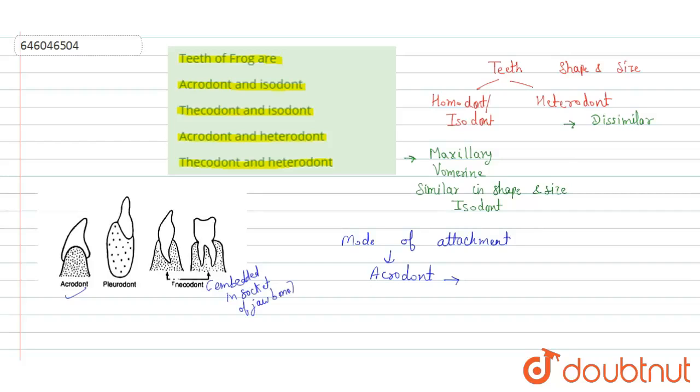So frogs have the acrodont. The teeth are attached to the surface of jaw bones or they are attached to the edge of the jaw bones. So frogs have the acrodont type of teeth.